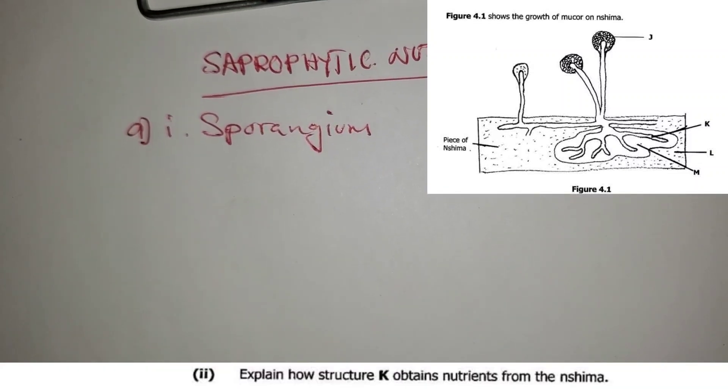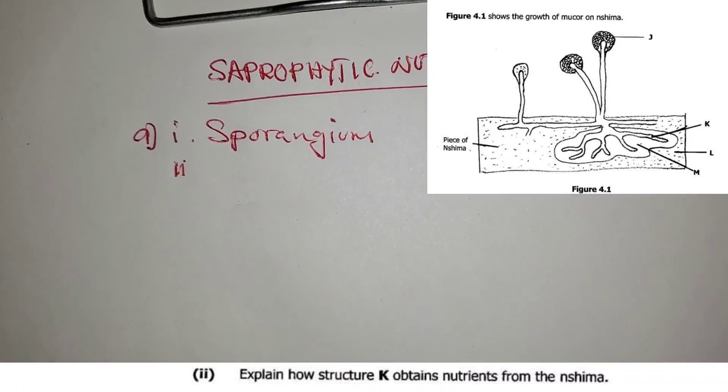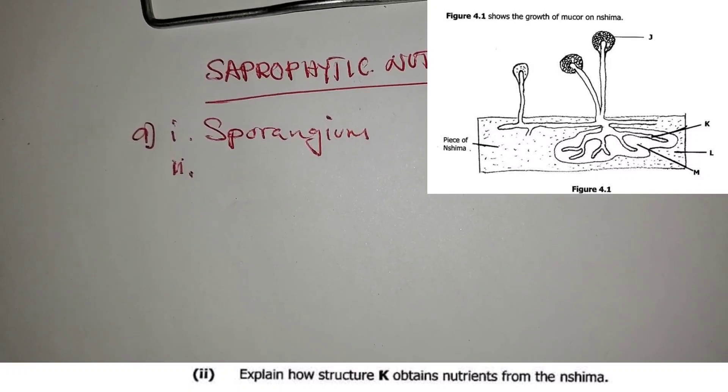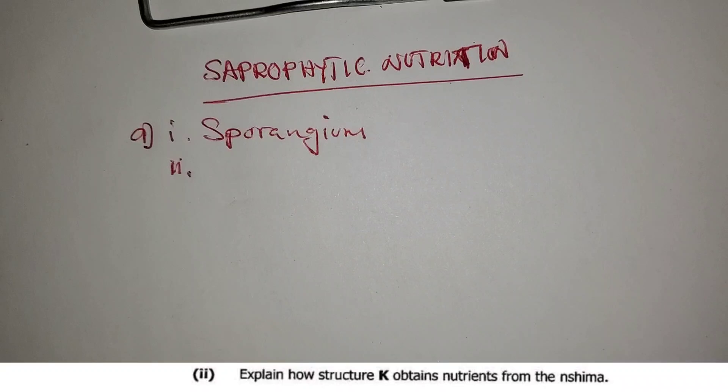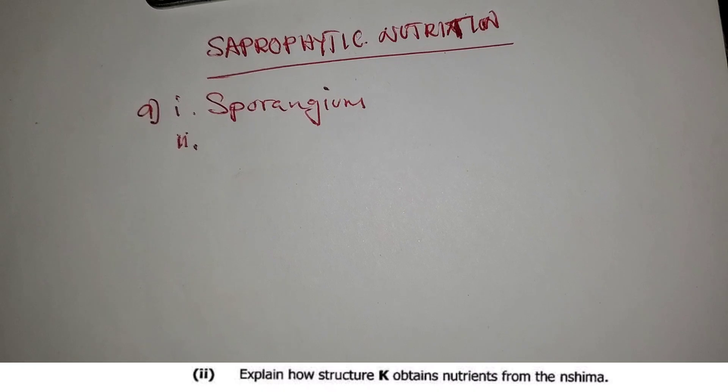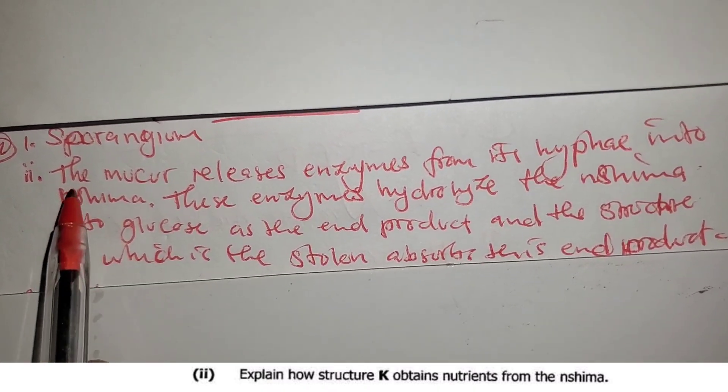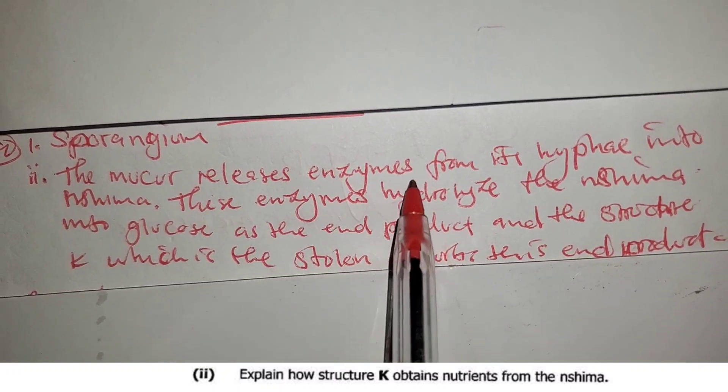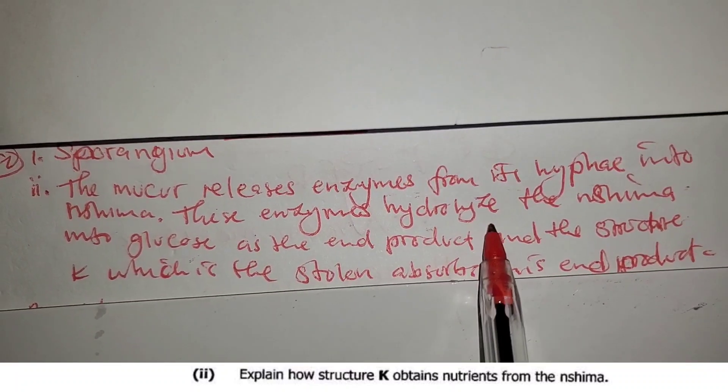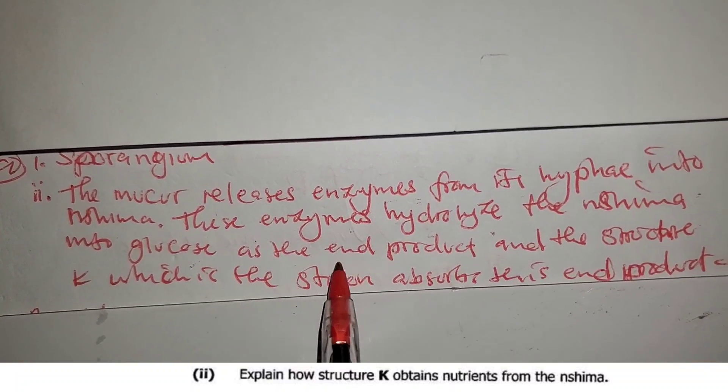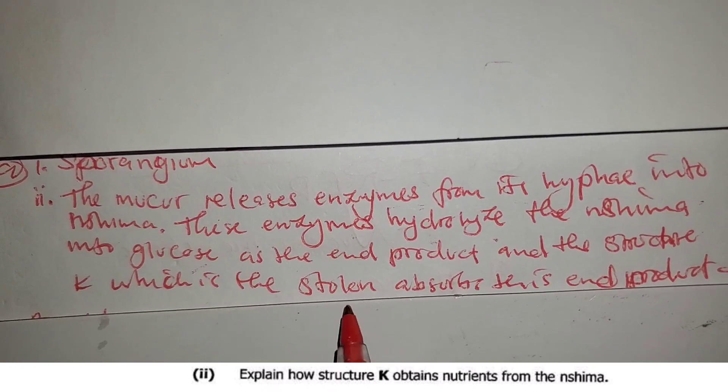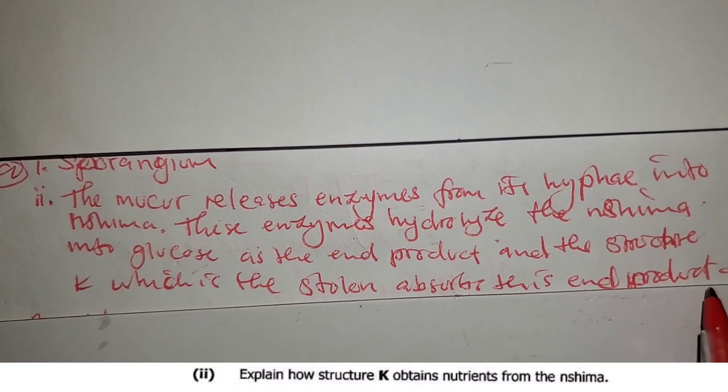Then question 2 is saying explain how structure K obtains nutrients from nshima for 4 marks. So structure K, we can say the mucor releases enzymes from its hyphae into nshima. These enzymes hydrolyze the nshima into glucose as the end product, and the structure K which is the stolen absorbs this end product.